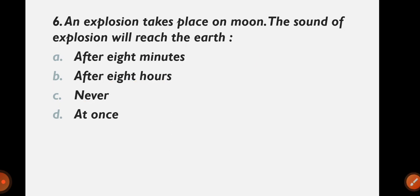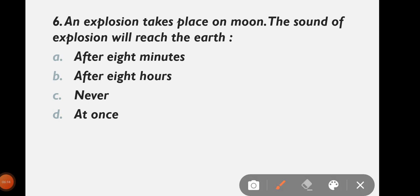Question 6: An explosion takes place on the moon. When will the sound of the explosion reach earth — after eight minutes, after eight hours, never, or at once? The correct answer is C: never. Sound will never come because the moon has no atmosphere, and sound needs a medium to travel.